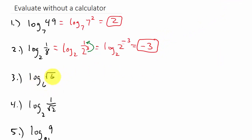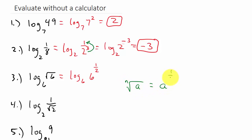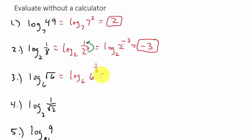Next, log base 6 of the square root of 6. Can we rewrite the square root of 6 as 6 to the one-half power? Yes — recall the property that the nth root of a equals a to the one over n, so whatever the index is becomes the denominator in the exponent. When there's no index written, it's understood to be 2. So the square root of 6 is 6 to the one-half, and since the bases are the same, our answer is one-half.